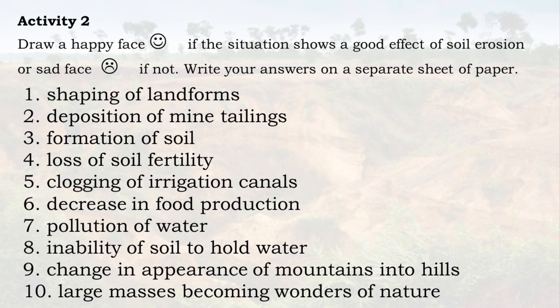Activity 2: Draw a happy face if the situation shows a good effect of soil erosion, or a sad face if not. Write your answers on a separate sheet of paper. 1. Shaping of landforms. 2. Deposition of mine tailings. 3. Formation of soil. 4. Loss of soil fertility. 5. Clogging of irrigation canals. 6. Decrease in food production. 7. Pollution of water. 8. Inability of soil to hold water. 9. Change in appearance of mountains into hills. 10. Large masses becoming wonders of nature.